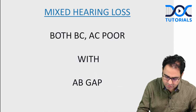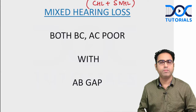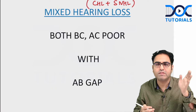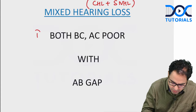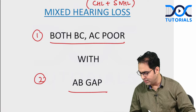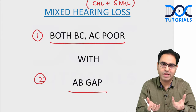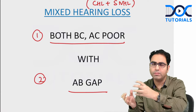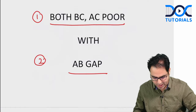Mixed hearing loss means CHL plus SNHL — middle ear problem combined with cochlea problem. In mixed hearing loss, both features combine: both AC and BC are poor (SNHL feature) with an AB gap present (CHL feature). So mixed hearing loss shows: both AC and BC poor, plus AB gap.